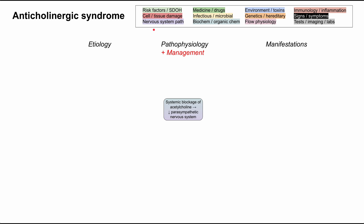At the center, the pathophysiology of anticholinergic syndrome is exactly what it sounds like. You have anti-acetylcholine — systemic blockage of acetylcholine throughout the body. This results in a significant decrease in parasympathetic nervous system activity, and we'll see how that manifests in many organ systems throughout the body.